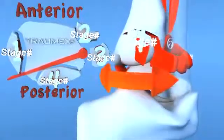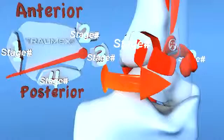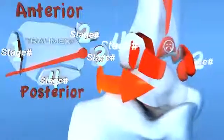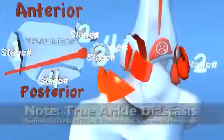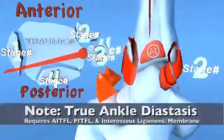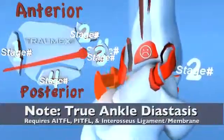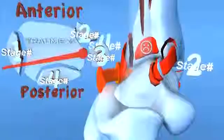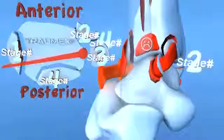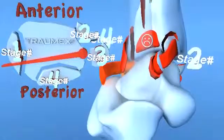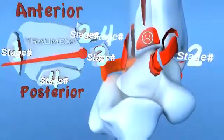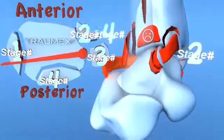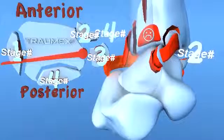Note: the combined rupture of the anterior inferior tibial fibular ligament, the posterior inferior tibial fibular ligament, and the interosseous membrane results in a true ankle diastasis.